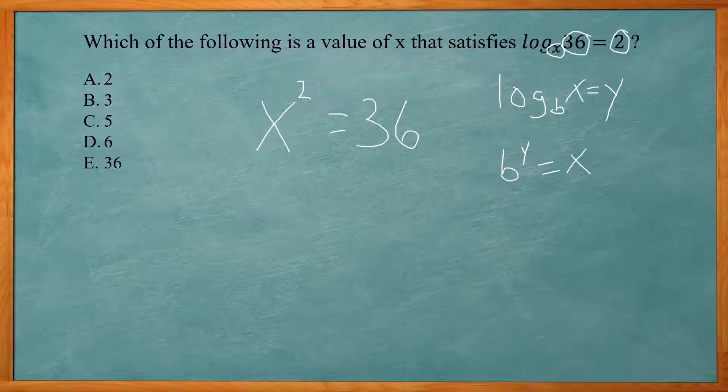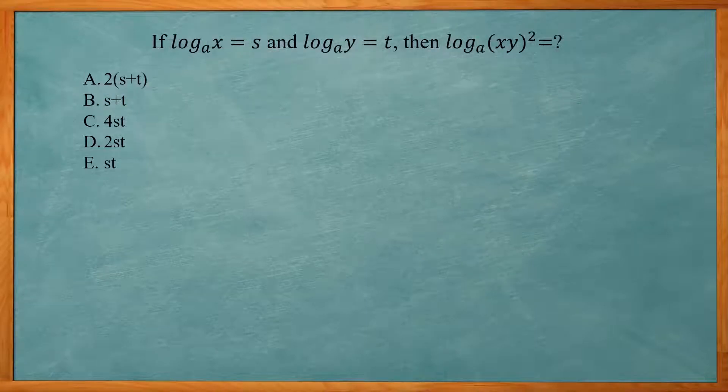And if you know your perfect squares, you know that has to be 6. 6 times 6 is 36. So our answer is D. This one says log base a of x equals s and log base a of y equals t. Then log base a of xy quantity squared equals.